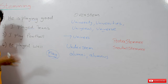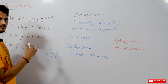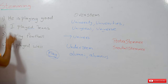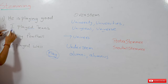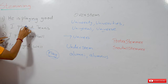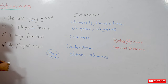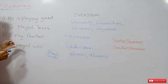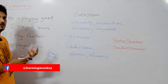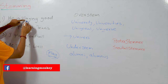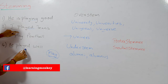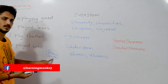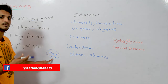Let me ask you a question — identify the same words from these sentences. 'He' and 'he' are the same word, 'I' and 'I' are the same word, 'played' is the same word. But we are missing 'play' and 'playing.' When we consider the meaning of the word, all these words — playing, played, play — come from the same stem word called 'play.'